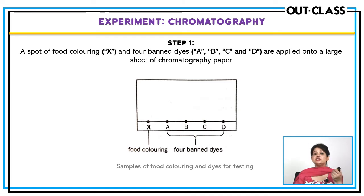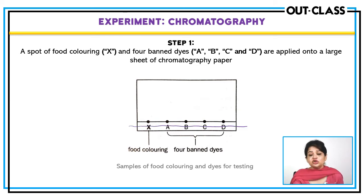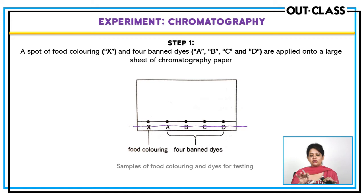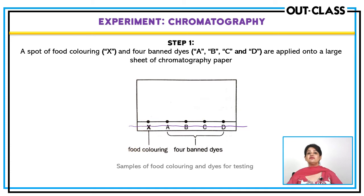We hang this paper in the solvent in such a way that the solvent level stays below the start line. The paper should be dipped in the solvent so the solvent can rise, but the start line must remain above the solvent. If the start line is dipped in the solvent, the mixture will dissolve into the whole solvent and spread across the whole paper, making the chromatogram unreadable and impossible to distinguish the spots.